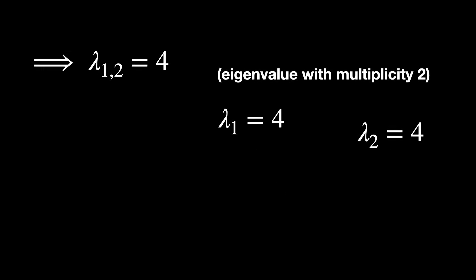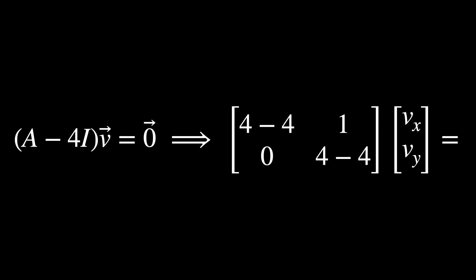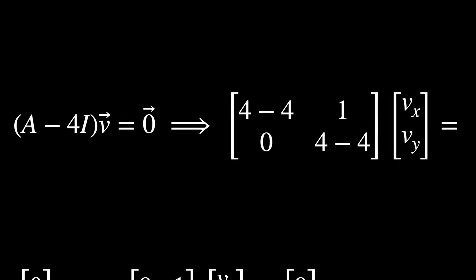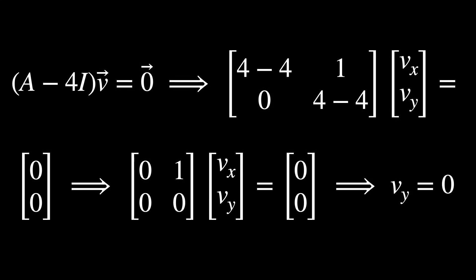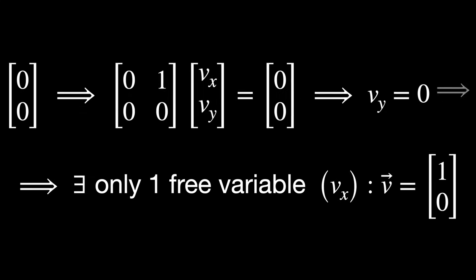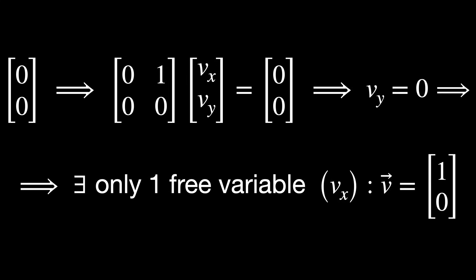And now, using the second equation, the one to find the eigenvectors and substituting lambda with 4, after working on the math here, you will find that Vy is 0, which implies that there is only one free variable, Vx, the x component of this vector.